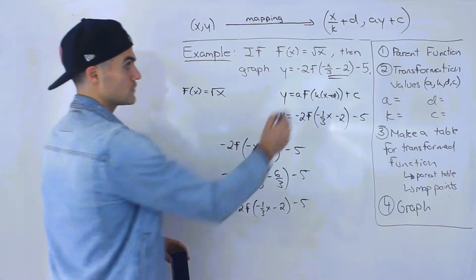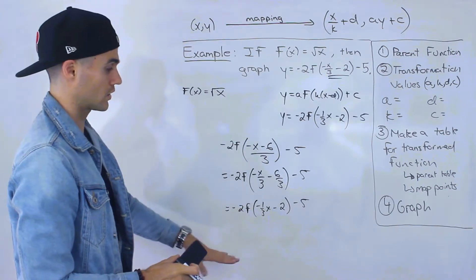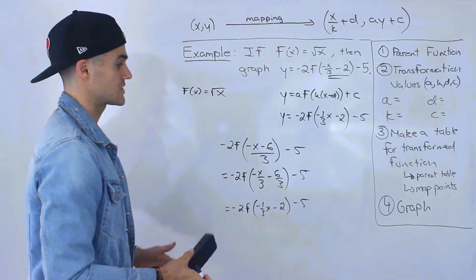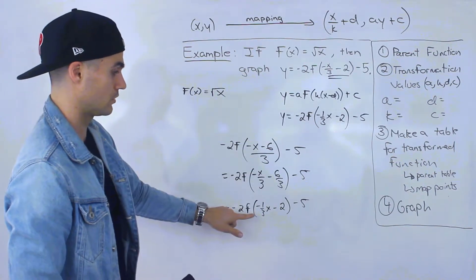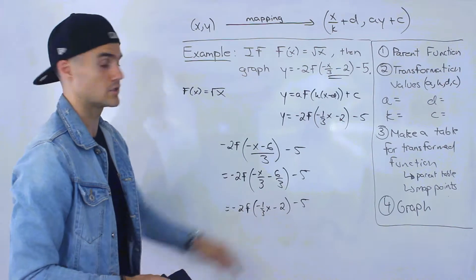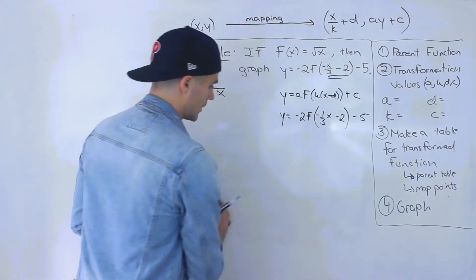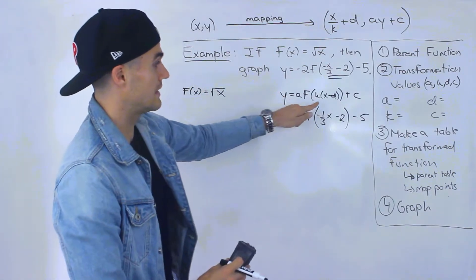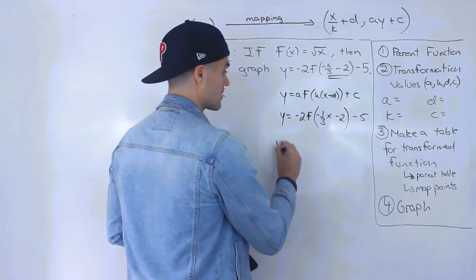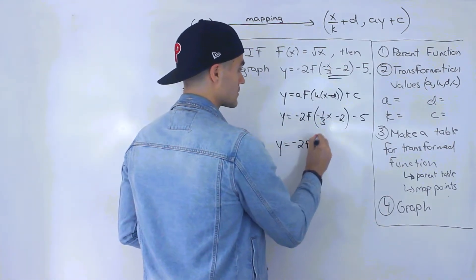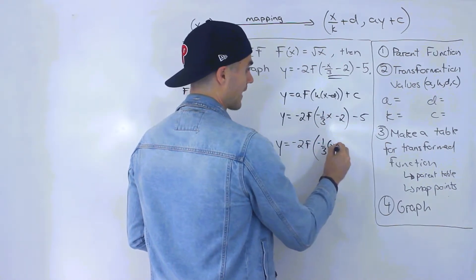Don't be confused if it's given in different formats — sometimes you'll need to do a little preliminary algebra to get it into a clearer format. Now we're not done, because in the general transformation format the x has to be by itself with nothing attached. So we actually need to factor out negative 1 over 3 from both terms, leaving us with just x inside the bracket.